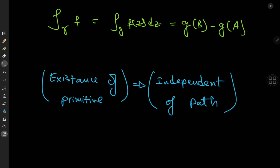Immediately we see one of the implications of this theorem. It doesn't care about the shape of the contour — gamma could be any smooth curve. What matters is f being continuous and the existence of its antiderivative. Also, if you have the contour integral over a closed contour c of a function f that's continuous and has an antiderivative, then the right-hand side would be g evaluated at some point minus g at the same point, meaning this is always zero.